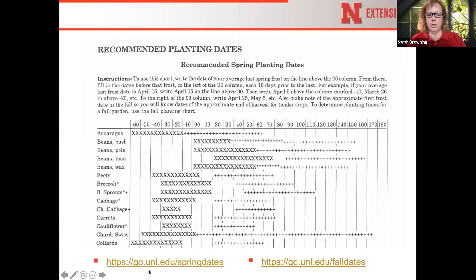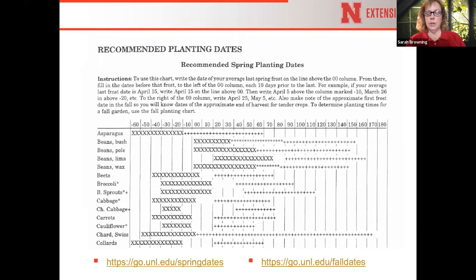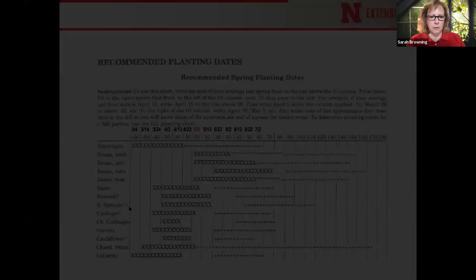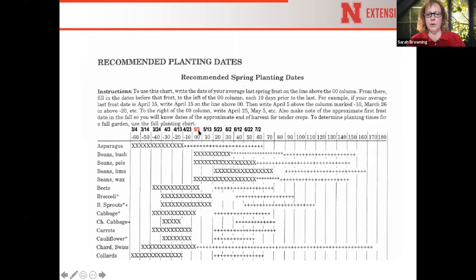You can download this sheet at go.unl.edu/springdates. There is also a similar sheet for fall dates; on that one you put in your first average fall frost date at the zero-zero position, then count forward and backward for fall crop planting dates. You can find that at go.unl.edu/falldates.